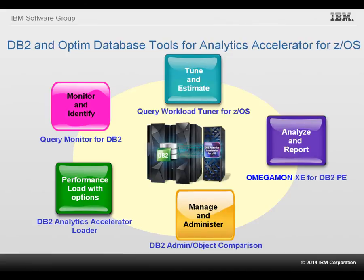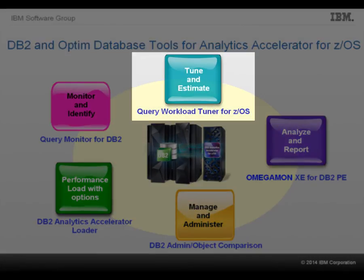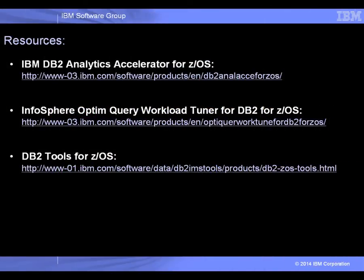In summary, you have learned how database administrators can capitalize on DB2 Analytics Accelerator for ZOS and the supporting DB2 and Infosphere Optum database tools to optimize and accelerate analytic queries to meet the ever-increasing velocity of business insight needs. In this scenario, we showed you how to use Query Monitor to analyze and push query workloads to OQWT for performance tuning and compare the performance data during two intervals. With OQWT, you can quickly analyze a workload and its query access paths to determine which set of SQL statements should be offloaded, along with the related tables that should be added to an accelerator. In addition, before implementing the offload, you can get the estimated cost savings and the estimated performance improvement. For more information, visit us on the web as shown here.